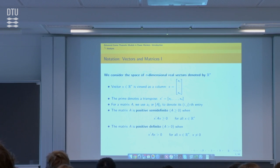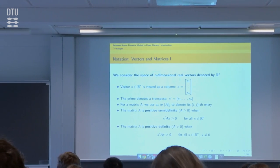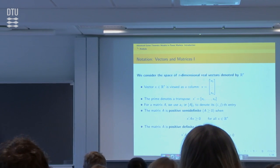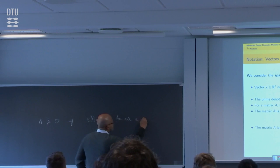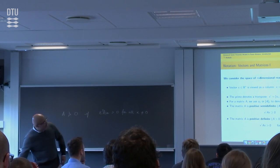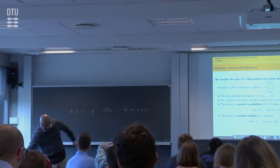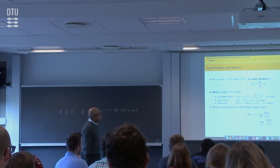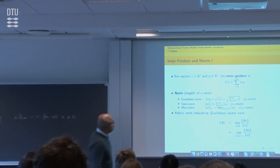Sometimes I find that I have not mentioned something on the slide. We are going to use this notation. A is positive definite if X transpose AX is greater than 0 for all X not equal to 0. It is positive semi-definite when that inequality is weak, i.e., greater than or equal to 0. For vectors X and Y, the inner product is X prime Y, or X transpose Y.